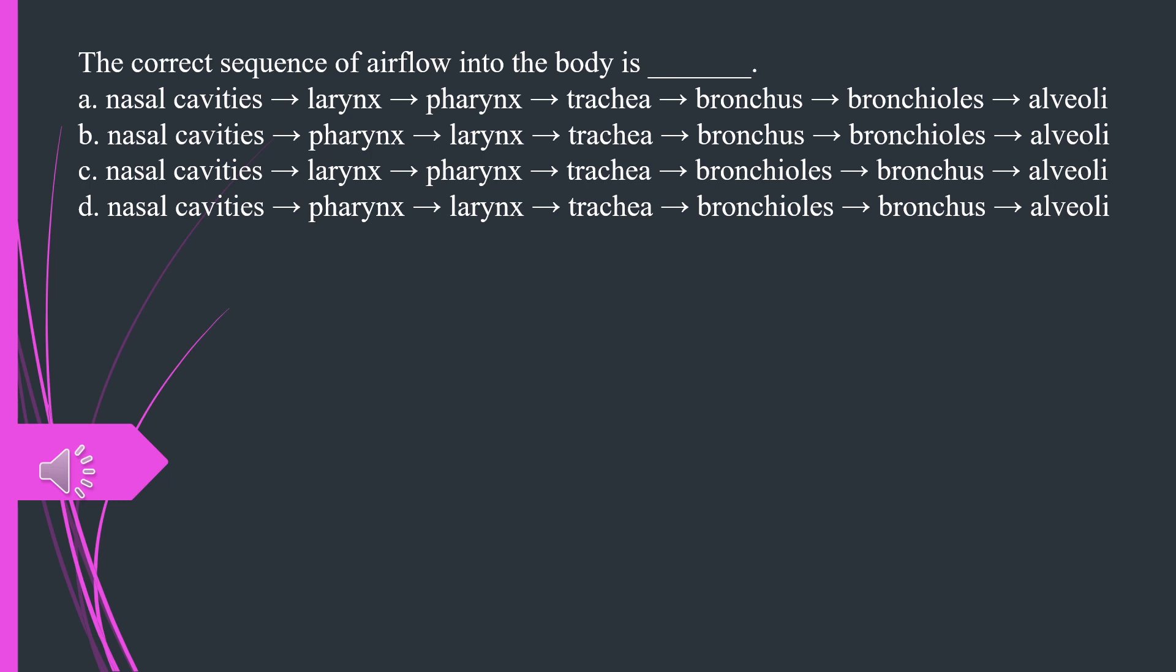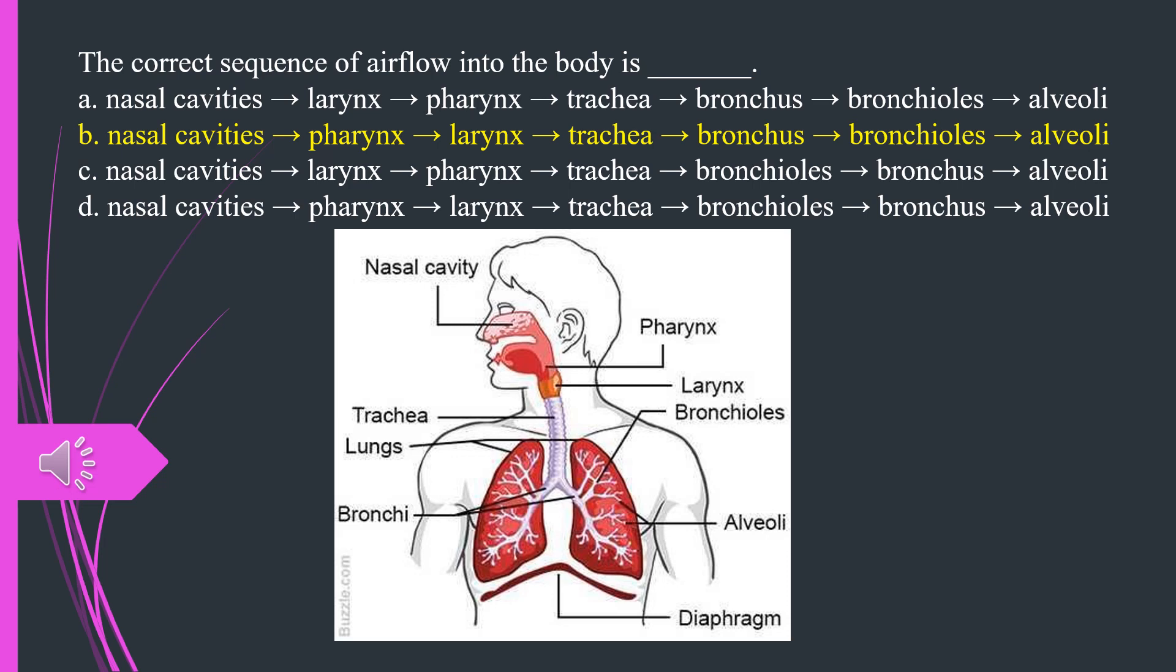The correct sequence of airflow into the body is A. Nasal cavities to larynx to pharynx to trachea to bronchus to bronchioles to alveoli B. Nasal cavities to pharynx to larynx to trachea to bronchus to bronchioles to alveoli C. Nasal cavities to larynx to pharynx to trachea to bronchioles to bronchus to alveoli D. Nasal cavities to pharynx to larynx to trachea to bronchioles to bronchus to alveoli. The answer is B.